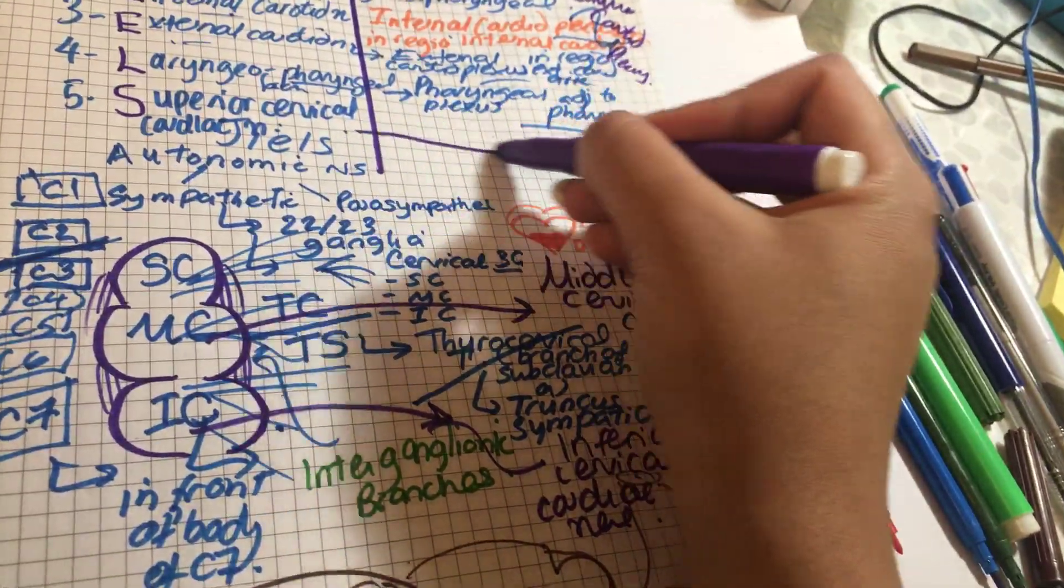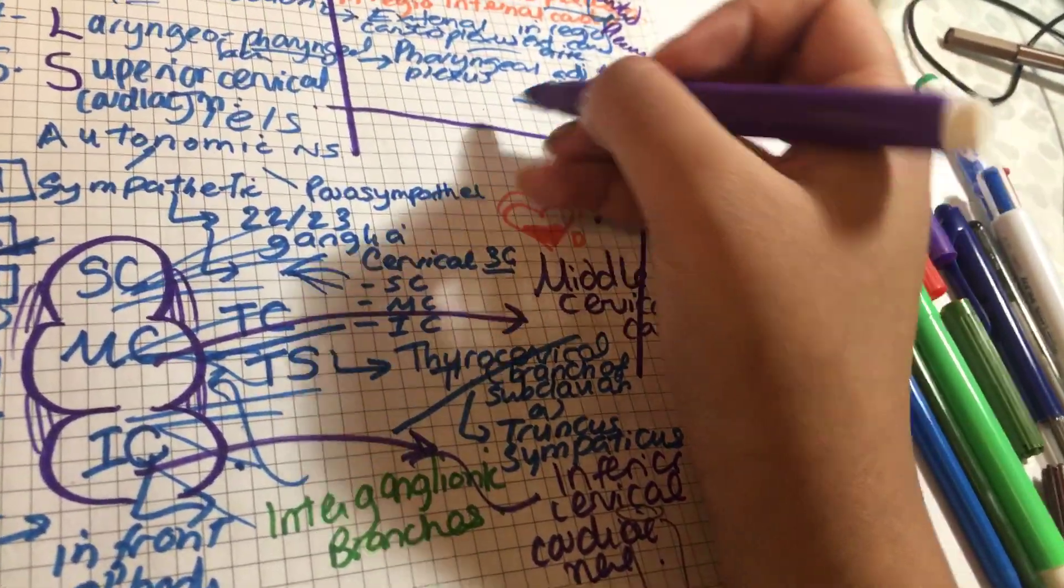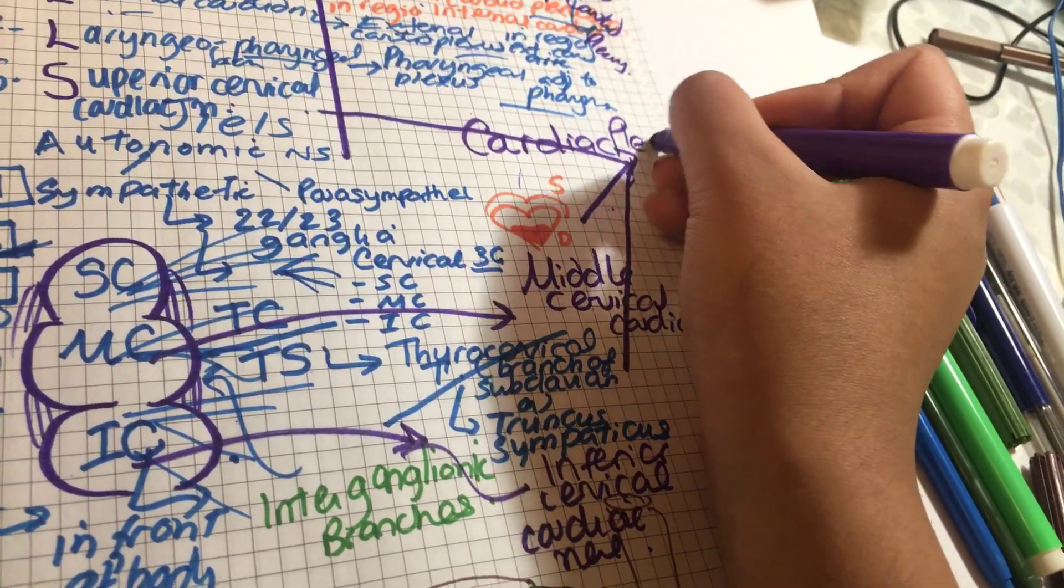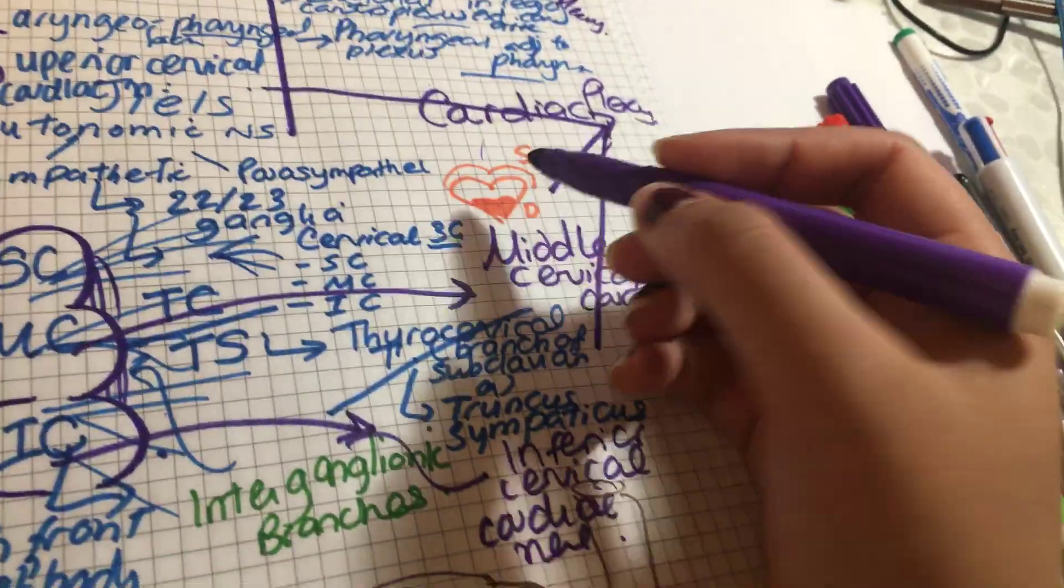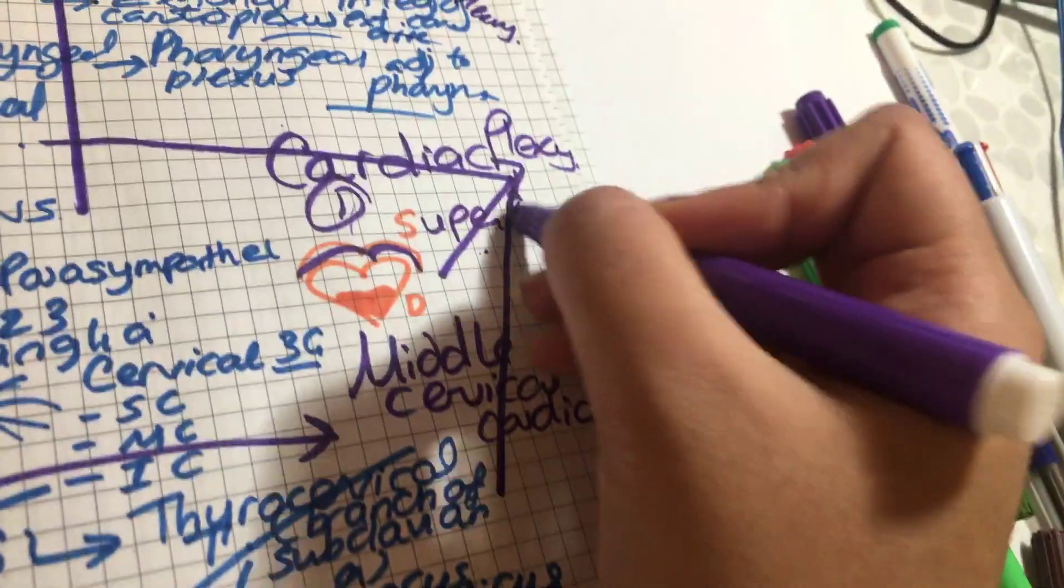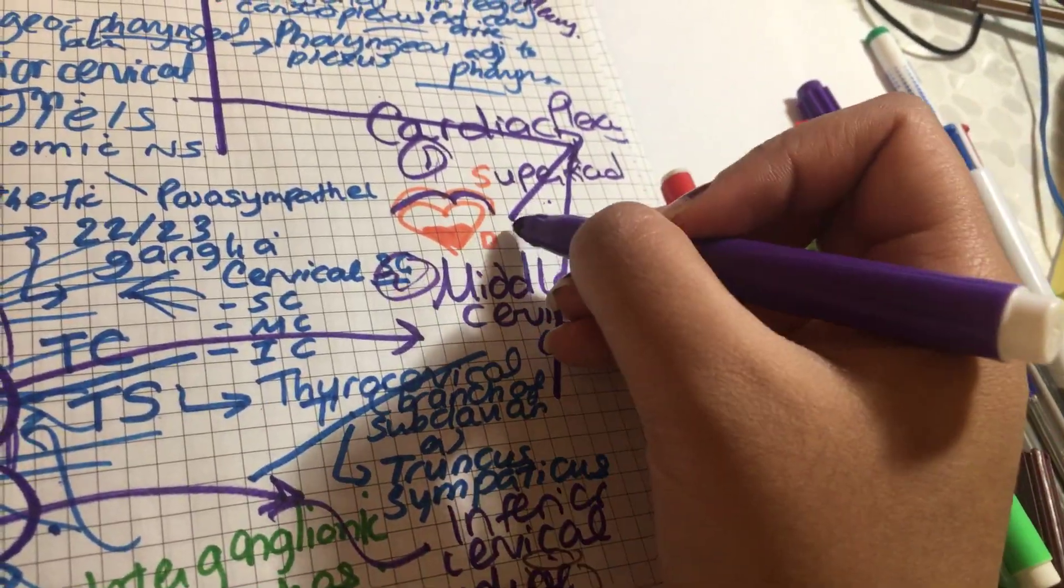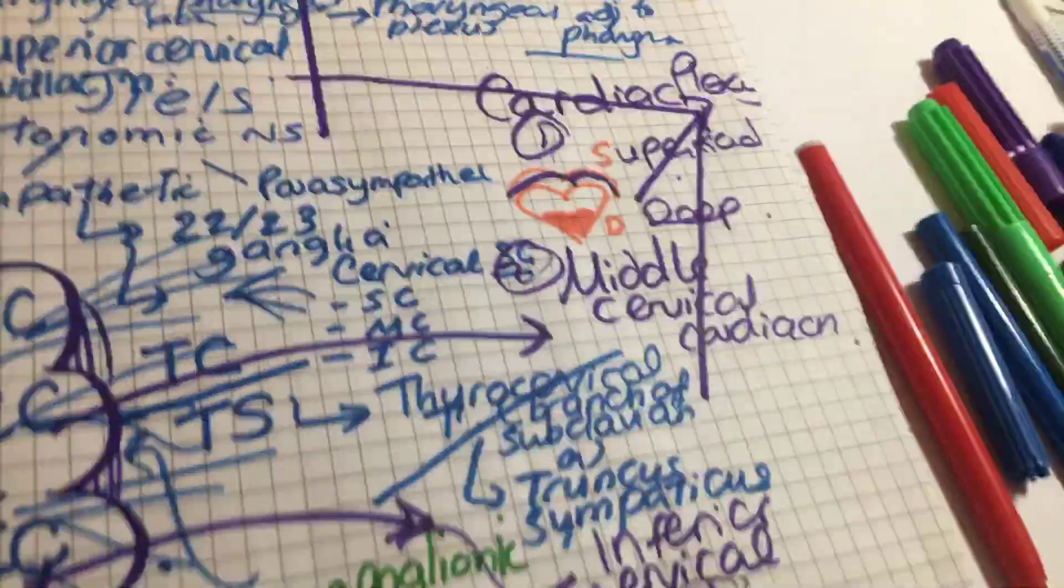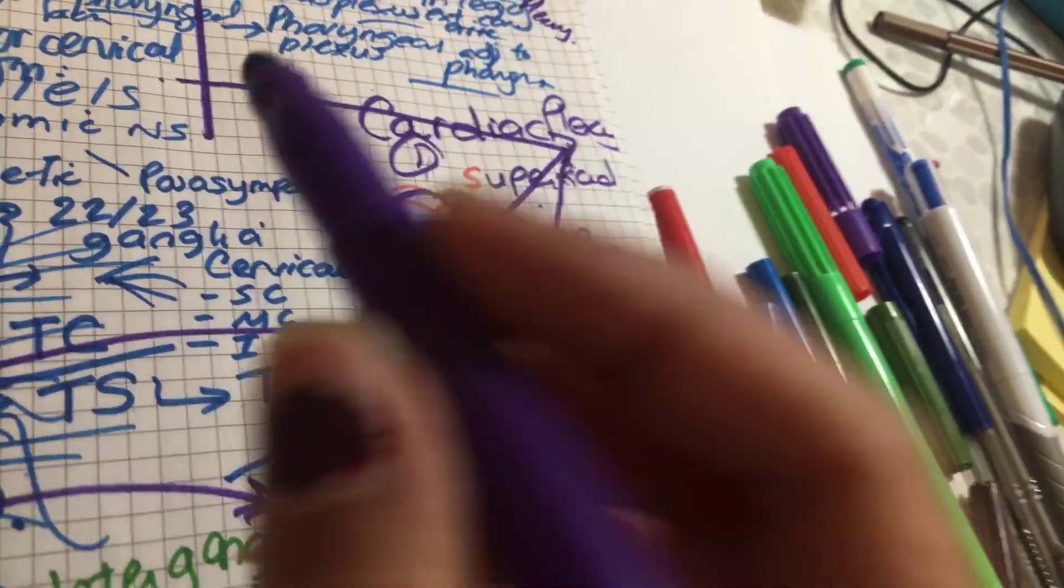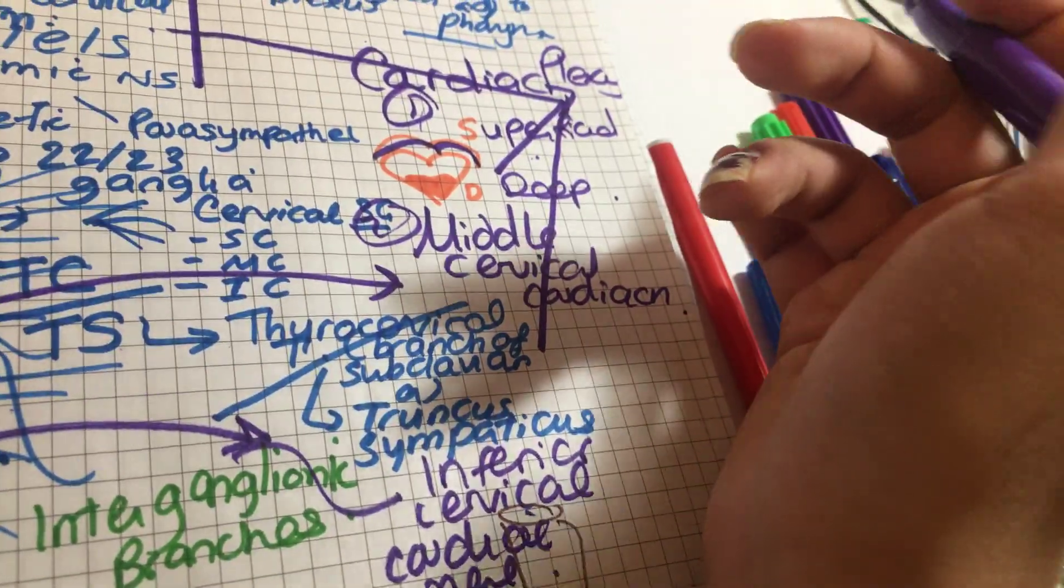And together, these give us our cardiac plexus. The cardiac plexus has two parts: one, a superficial part, and two, a deep part. The superficial part is in front of the pulmonary trunk and the arch of the aorta, and the deep part is adjacent to the superior vena cava.